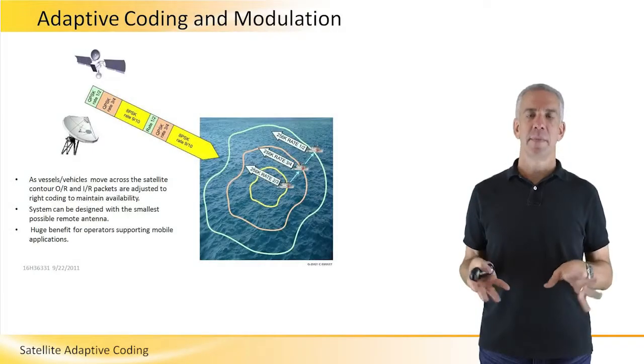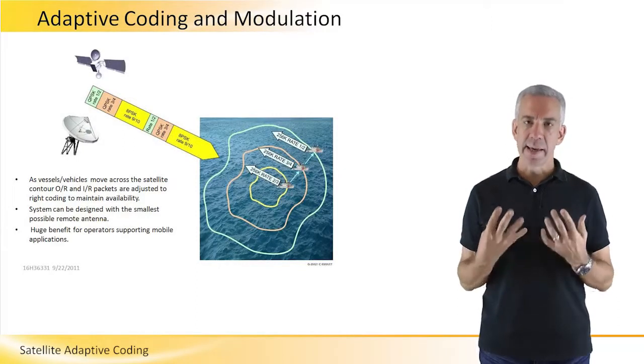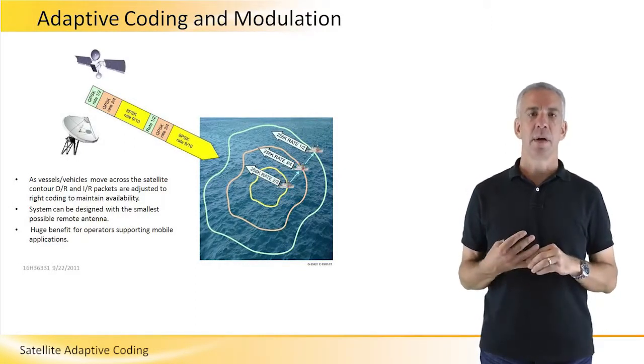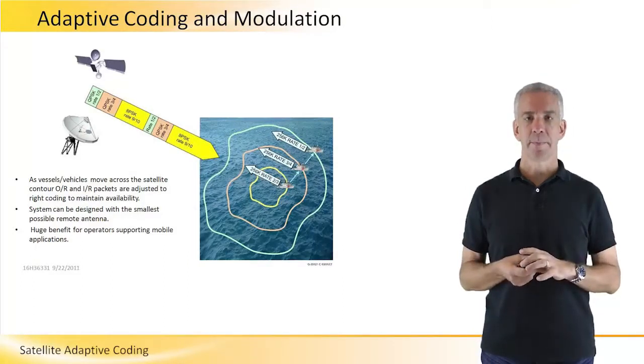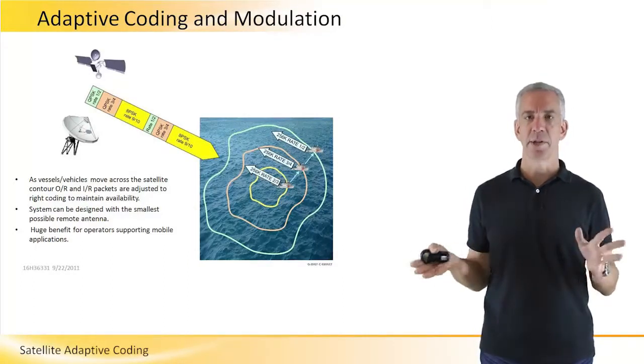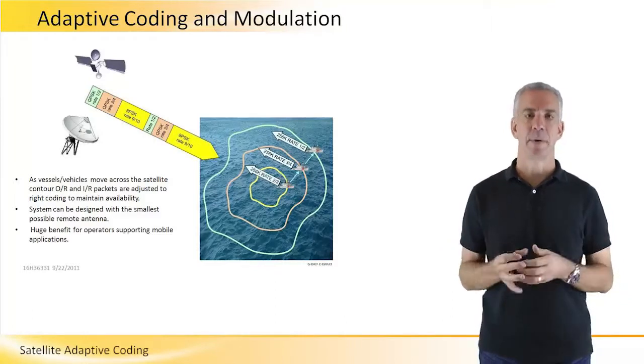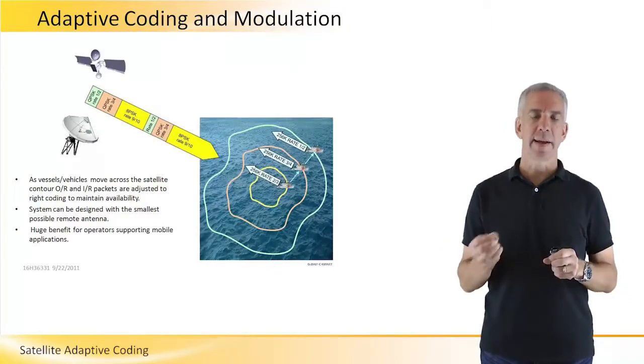Adaptive coding and modulation is a key technology that's being used to enable mobility. Adaptive coding and modulation, or ACM, is a technique, a technology, whereby the remote terminal is constantly measuring and evaluating the received signal from the hub or gateway station.